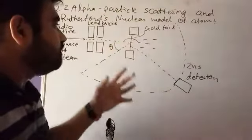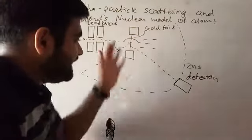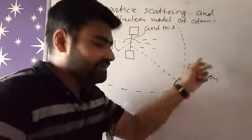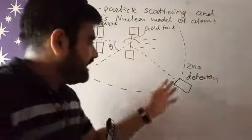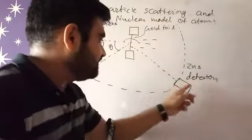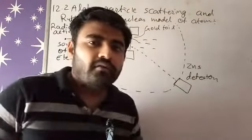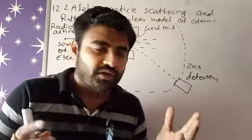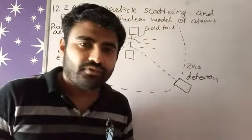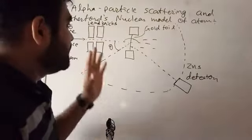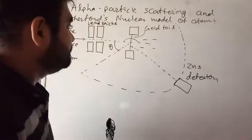So we can detect by this ZnS detector which is, whenever electron is just striking on the surface, the electron will glow due to this ZnS screen. Right? So that's why we can find theta angle for as many electrons as possible.